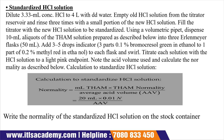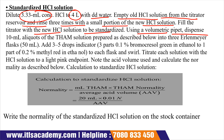To prepare standardized HCl solution, take 3.3 ml of concentrated HCl and dilute with 4 liters of deionized double-distilled water. Remove the old HCl solution from the titrator reservoir, rinse three times with small portions of the new HCl, then fill the titrator with the new HCl solution to be standardized. Using a volumetric pipette, dispense three 3 ml aliquots of THAM solution into 50 ml flasks.